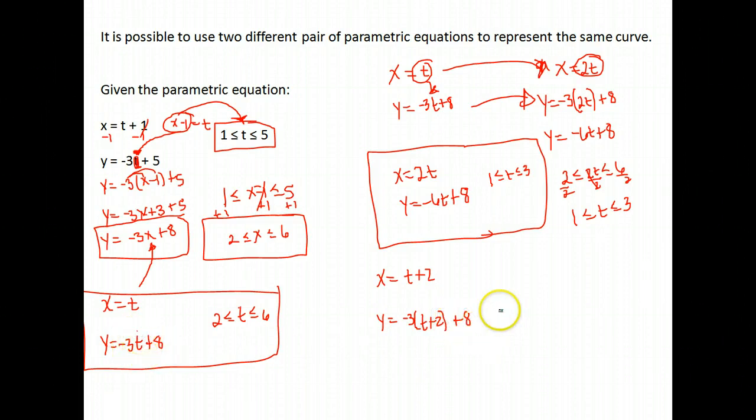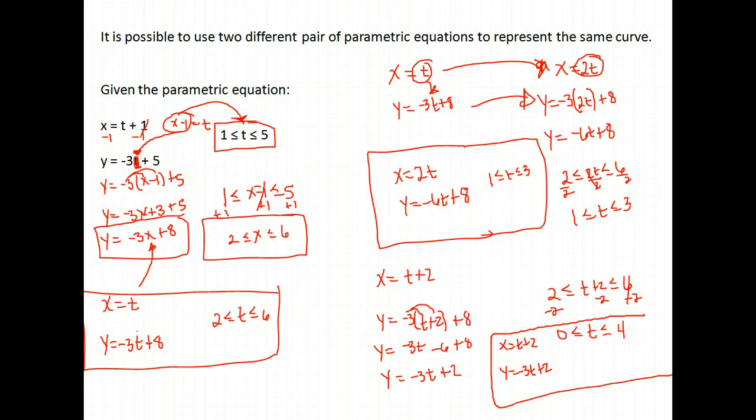I just substituted t plus two. Do the same thing with your domain here, so two is less than or equal to t plus two, less than or equal to six. And then we just need to simplify here and here. This would give me y equals negative three t minus six plus eight, which is y equals negative three t plus two. And here, to solve for t in the center, I would have to subtract two, which means I have to subtract two from all other parts. So I get between zero and four. So I have yet another description of a parametric equation that describes exactly the same curve. It would be that x equals t plus two, y equals negative three t plus two for t between zero and four.